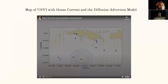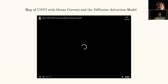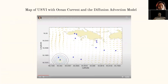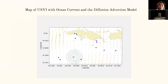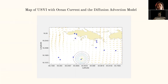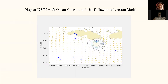Now we have a map of the United States Virgin Islands with ocean currents and the diffusion-advection model. The yellow arrows represent the ocean currents and the blue stars represent the coral reef sites. The expanding circle represents how SCTLD traveled between reef sites and whether any of the reef sites are connected.